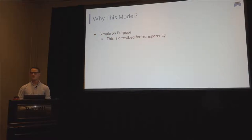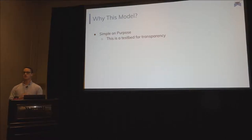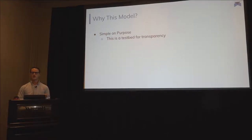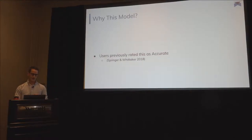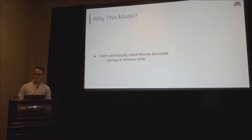You're probably asking why we're using such a simple model. This is simple on purpose. If we're trying to figure out transparency and can't explain a linear regression to end users, how can we hope to make something like a neural network intelligible? We're starting at the ground floor. Also, in this domain, users have previously rated this simple algorithm as accurate — 6 out of 7 on a Likert item — so for users with this application, it seems good enough.